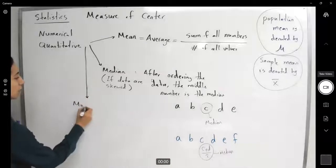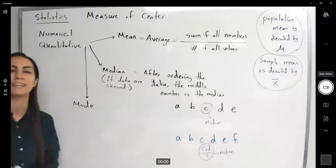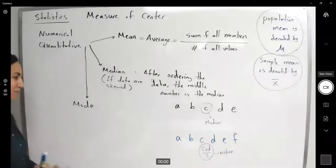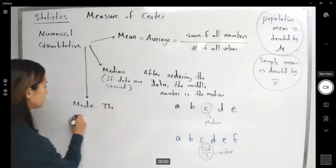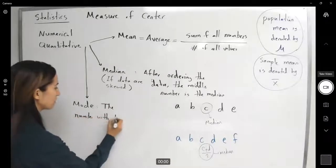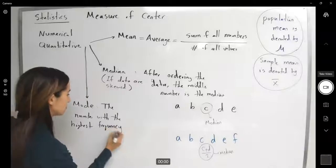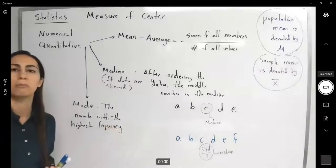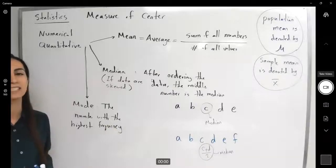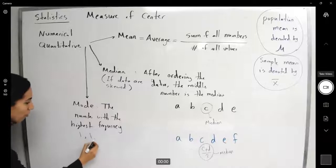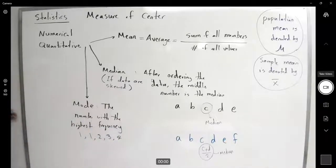And finally, we have the mode. What is the definition of mode? Mode is the measure of center, which is repeated the most in your collection, the number with the highest frequency. You look for the number with highest frequency and you say that number is my mode. For example, 1, 1, 2, 3, 4. The number with the highest frequency is 1, so my mode is 1.